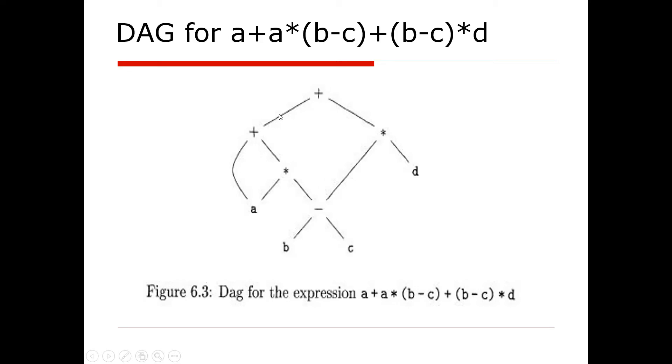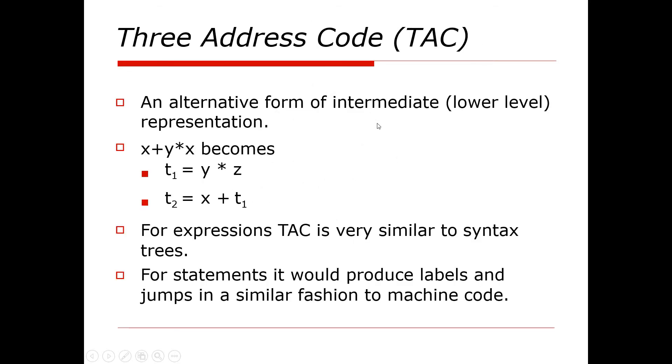Now we will solve three-address code. Firstly, we can tell that it is an alternative form of intermediate representation, a lower-level representation. Here, x + y*z becomes t1 and t2, where t1 = y*z and t2 = x + t1.